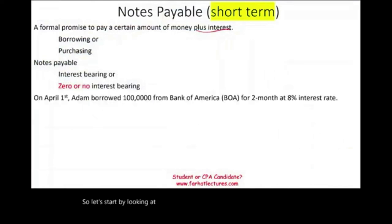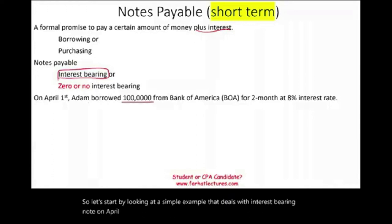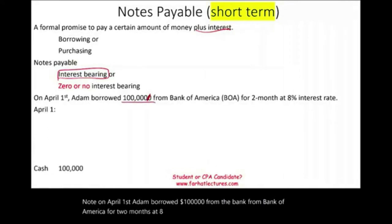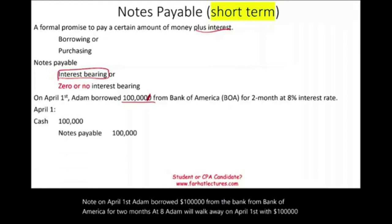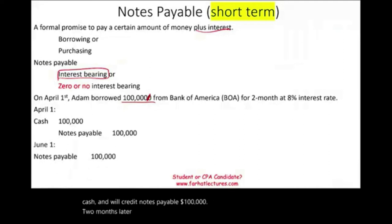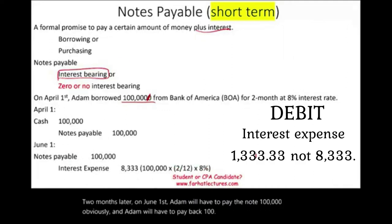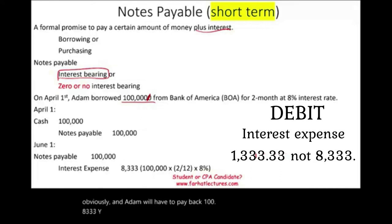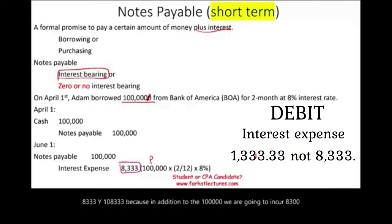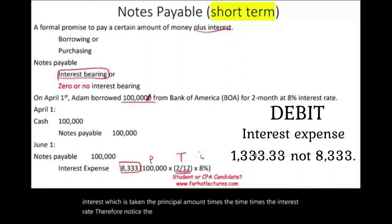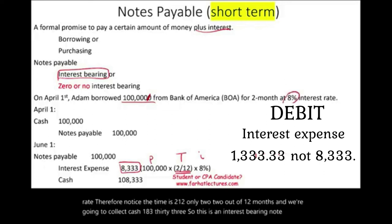Let's start with a simple interest-bearing note example. On April 1st, Adam borrowed $100,000 from Bank of America for two months at 8%. Adam receives $100,000 cash and credits notes payable $100,000. Two months later, on June 1st, Adam pays back $108,333 — the original $100,000 principal plus $8,333 interest, calculated as $100,000 × 8% × (2/12). Cash is credited for $108,333.